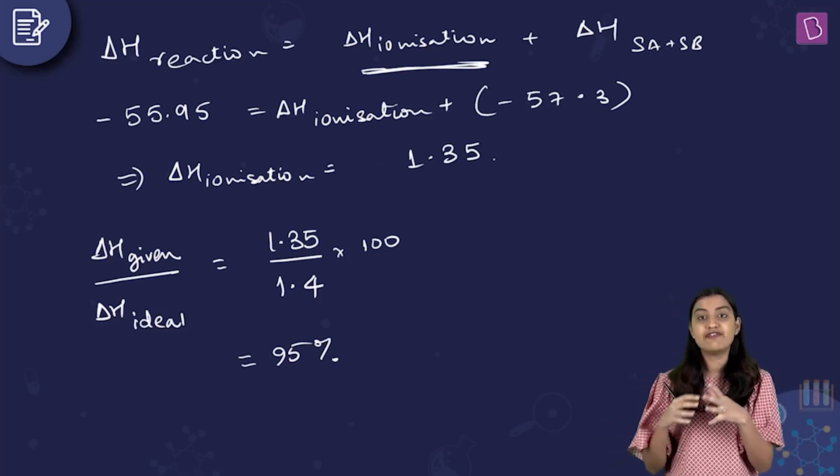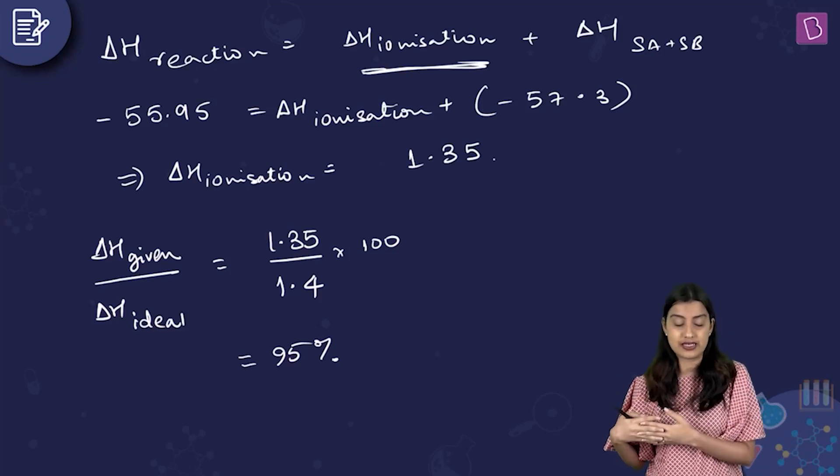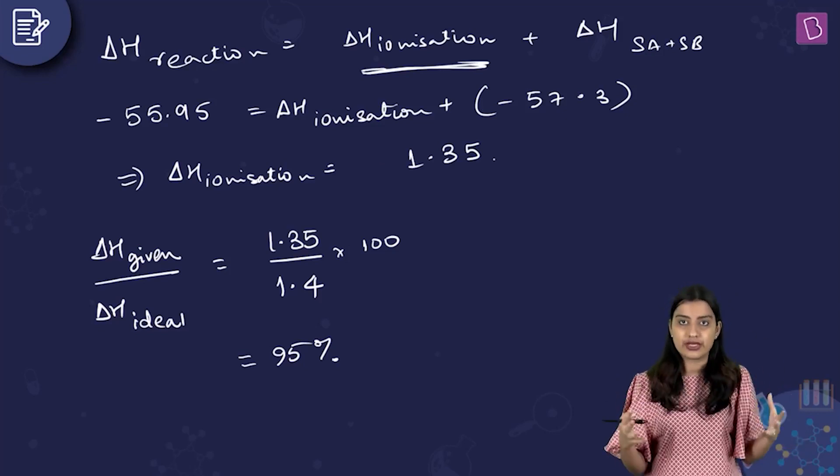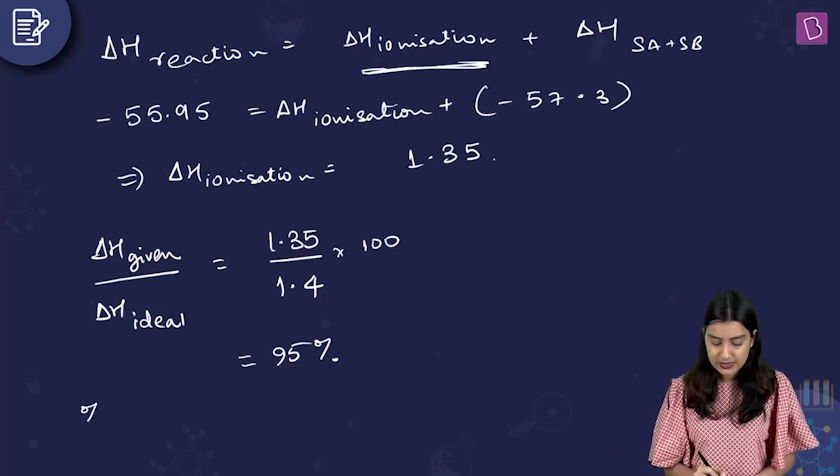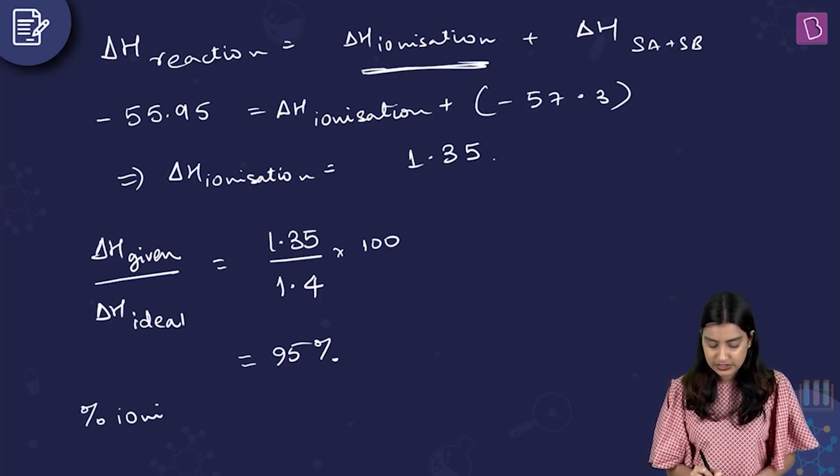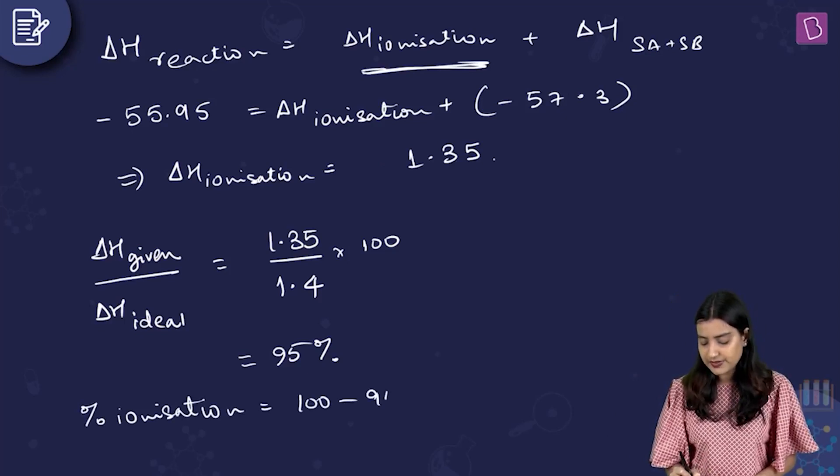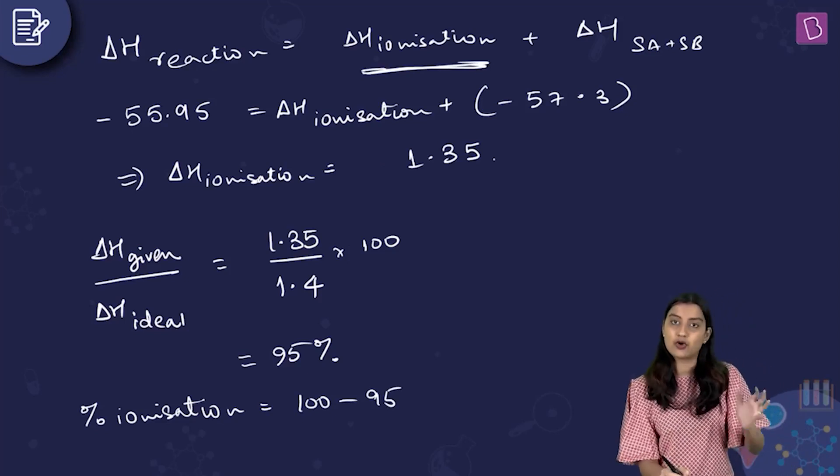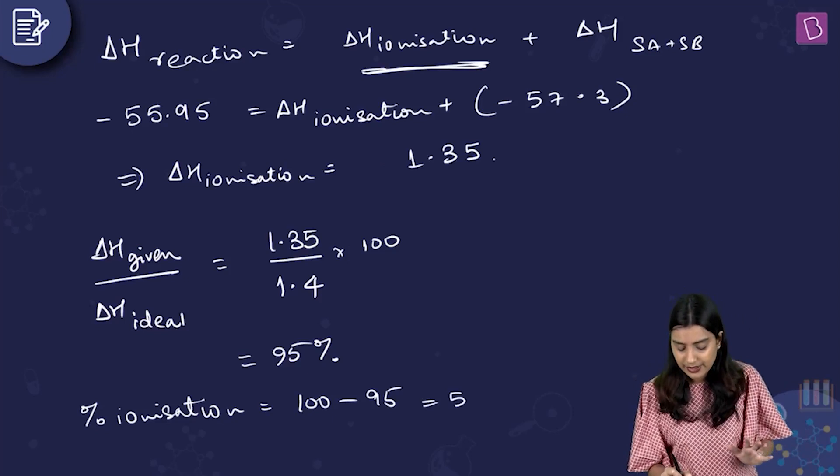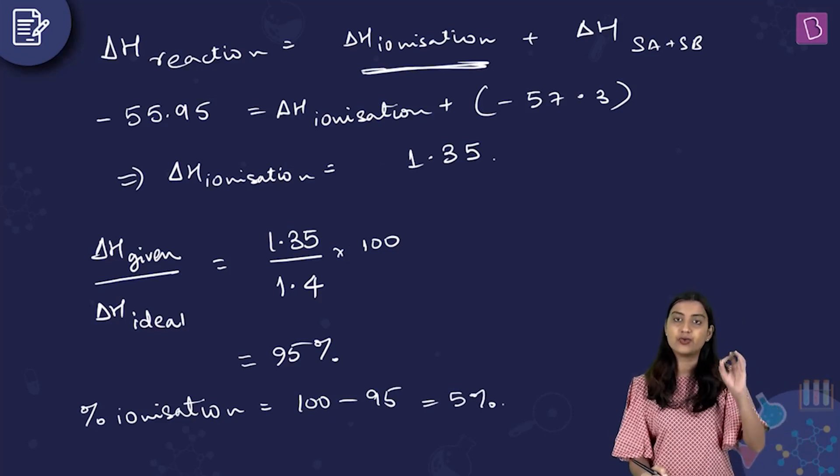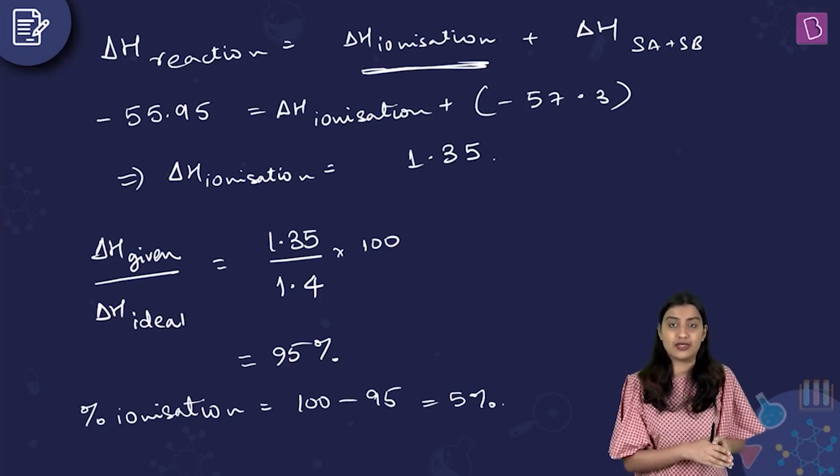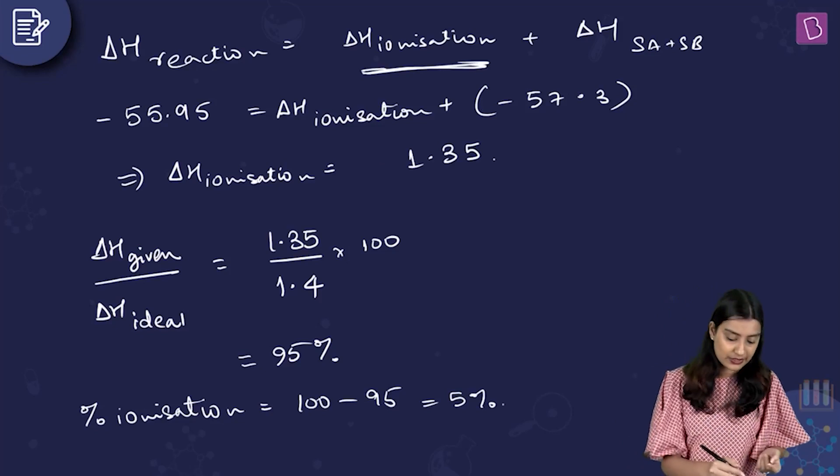Now when you find out what do you get? You get 1.35 by 1.4. This is definitely going to be greater than 95%. For convenience, I'm just writing 95%. Because I don't want to go through with the entire calculation. This is 95% unionized acid. Because your denominator is talking about 1 mole of unionized acid.